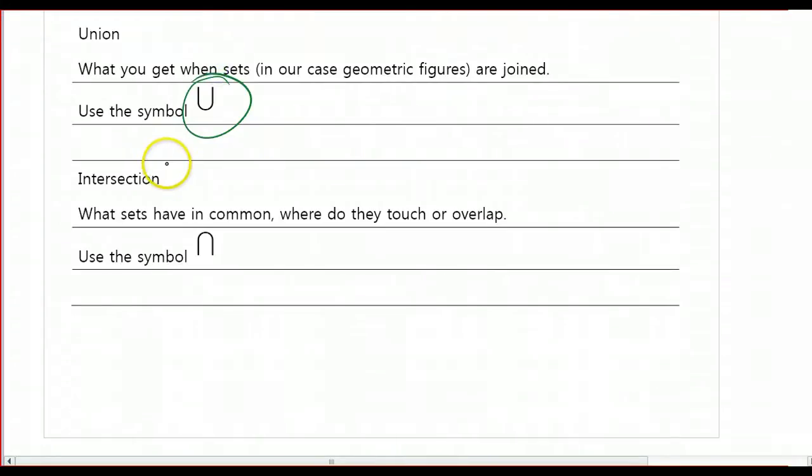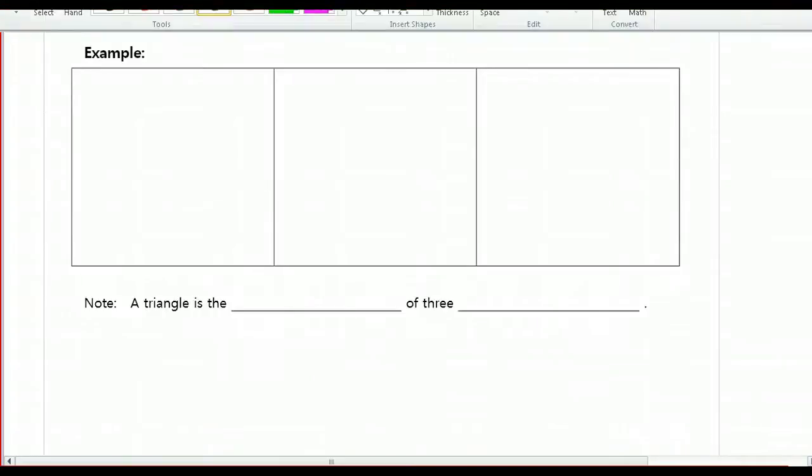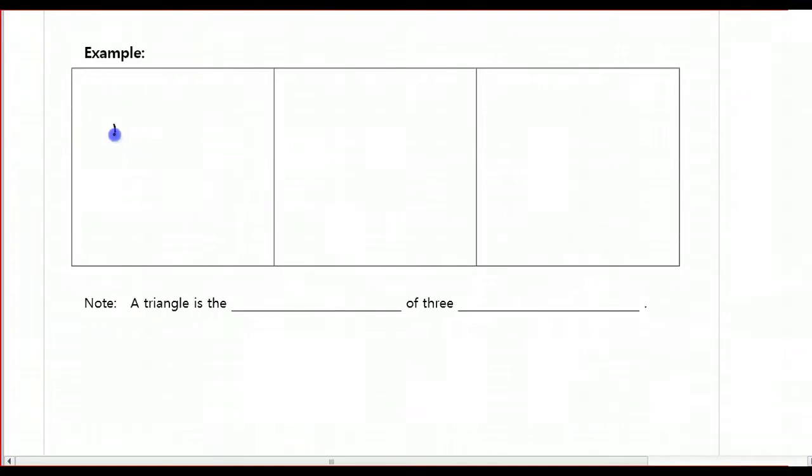And then we have intersection. This is what sets have in common. When we're talking about geometric figures, you might think about where do they touch or where do they overlap. And then we take that symbol and we flip it over, and it becomes the symbol for intersection. So let's draw a picture here and then we'll do some sample problems. I'm going to have a quadrilateral. Let's draw the diagonals and label the points. I've got A, B, C, D. This will be E. And then I'm going to add one more point over here, point F.